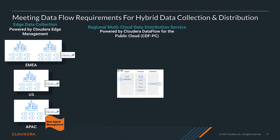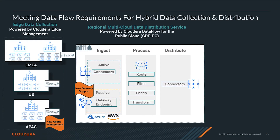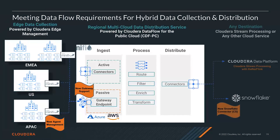Each POS MiNiFi agent streams data to a distribution flow powered by CDF for Public Cloud. The distribution flow runs in the region and cloud provider dictated by the geo that the POS data originates from, addressing the data residency and process-anywhere needs of requirements three and four. The NiFi distribution flow consists of three components: ingest, process, and distribute. The latest CDF Public Cloud release supports setting up an ingress gateway across any cloud provider in a few clicks, automating creation of load balancers, DNS records, and certificates. The ingress gateway allows each POS client to stream data in, and then the NiFi flow performs routing, filtering, and redaction before delivering to downstream services including Cloudera Streams Processing and Snowflake, addressing requirement six.